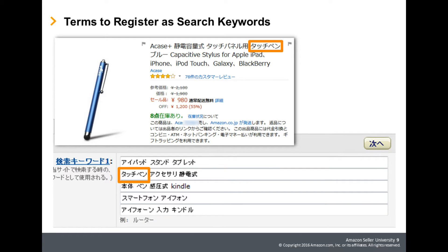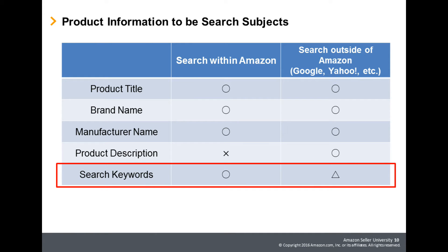Regarding terms to register for search keywords, product names and brand names are considered search targets. Therefore, it is not necessary to register them as search keywords. Also, the product description is not subject to keyword searches from the Amazon site search box. The product description is mostly included as search subjects outside of Amazon, such as search engines, but with the search system within the Amazon site, the product description is not a search subject.